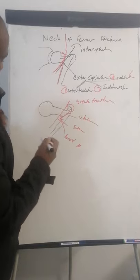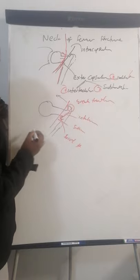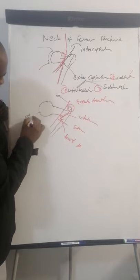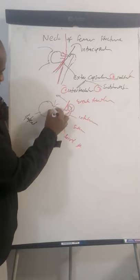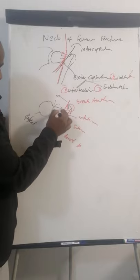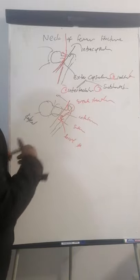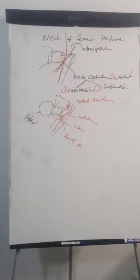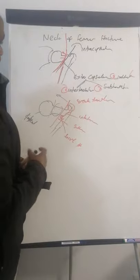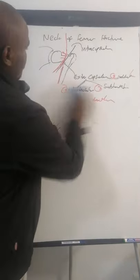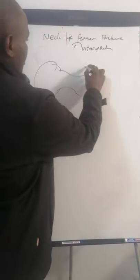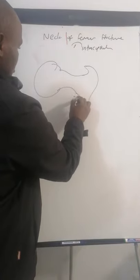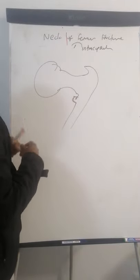Intracapsular fractures are those above the capsular line. They can be capital fractures — fractures of the head of the femur — or the classical neck of femur fractures. They're all called neck of femur fractures broadly, but when speaking to an orthopod you need to specify exactly what's happening.